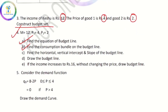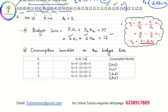The budget line will be consumed. If you have this equation, you will find: x2 equals m by p2 minus p1 by p2 times x1. So 12 by 2 minus 4 by 2 x1. That is x2 equal to 6 minus 2x1.